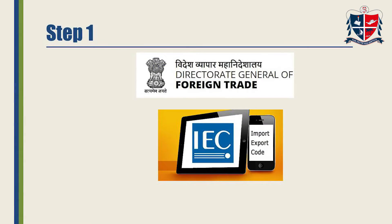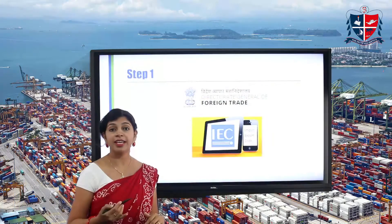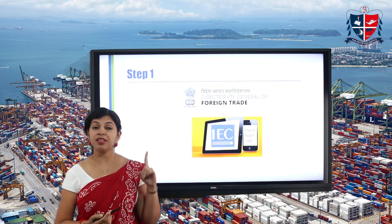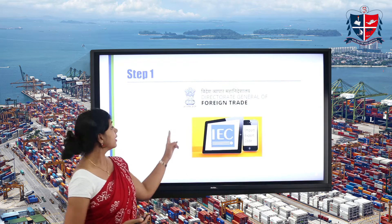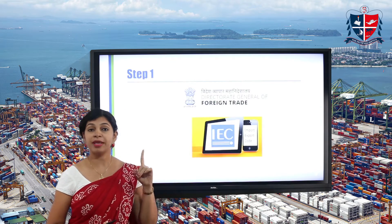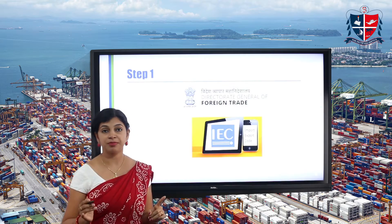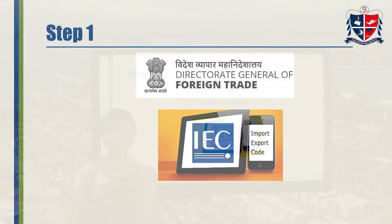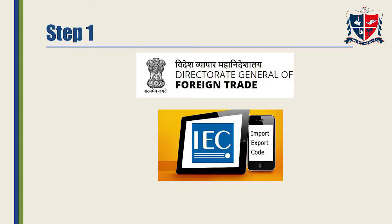Now let's go into the detailed process. If you are an exporter, what are the steps you have to take when you get into international trade? The basic primary step is you have to register with the Directorate General of Foreign Trade (DGFT) — that's the first fundamental step. When you get registered and take membership in the DGFT, they will give you a code called the Importer Exporter Code, or IEC. It's just like the PAN number we all have — a 10-digit number.